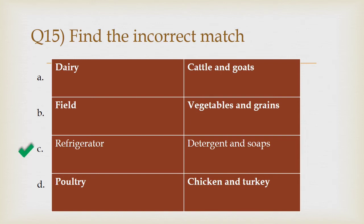The correct answer is option C: Refrigerator, detergent and soaps.